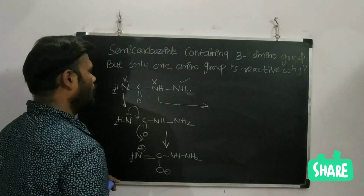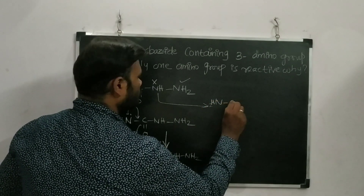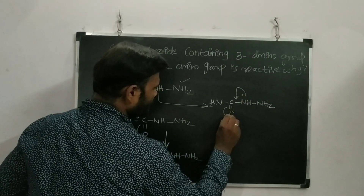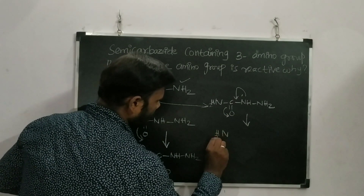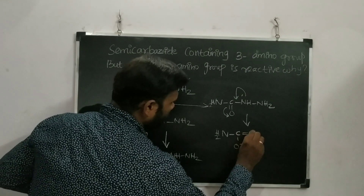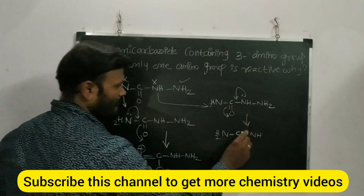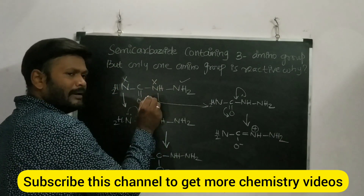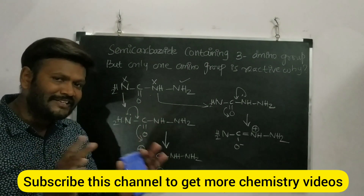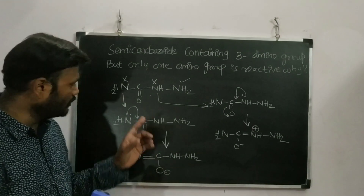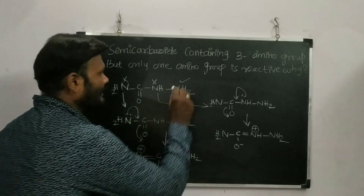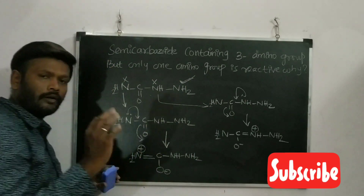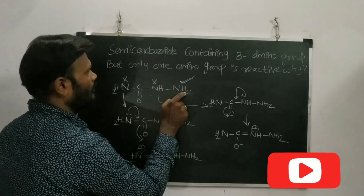Similarly for the other NH₂, it also donates its lone pair to the adjacent C=O group: NH₂–C becomes NH=C–O⁻. Because of this electron donation, that nitrogen also becomes stabilized. So both of these nitrogens — the two NH₂ groups — are stabilized by resonance with the adjacent carbonyl group. Therefore they are not free to react. Only the central NH is free and reactive.